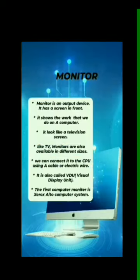Hi, my name is Shifar Jasmine and the upcoming topic is monitors and its 3 types. A monitor is an output device. It has a screen and shows the work that we do on a computer. It looks like a television screen. Like a TV, monitors are also available in different sizes. We can connect them to the CPU using a cable. It is also called a video display. The first computer monitor is the Xerox Alto Computer System.